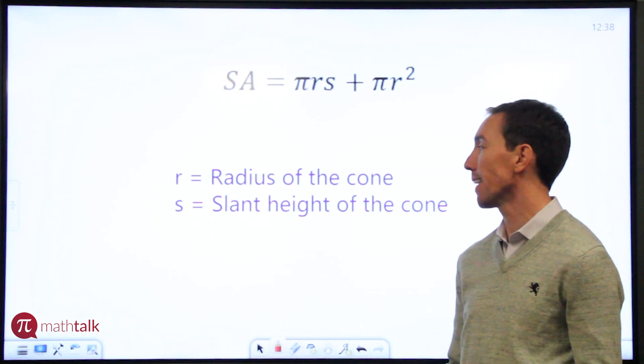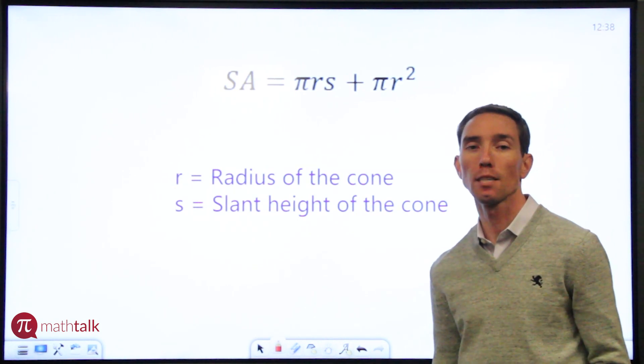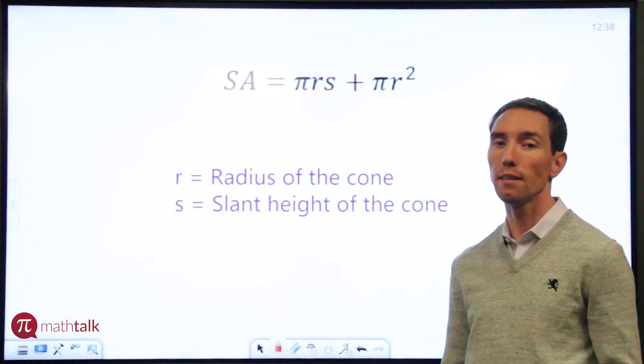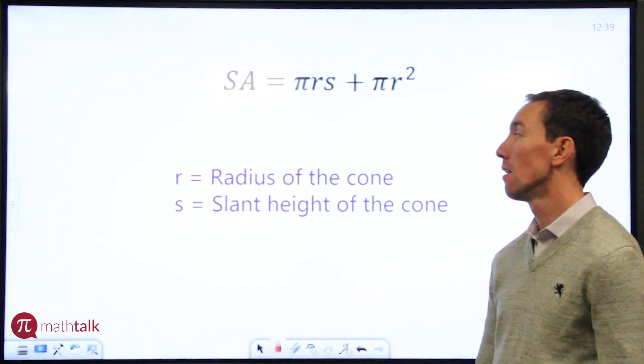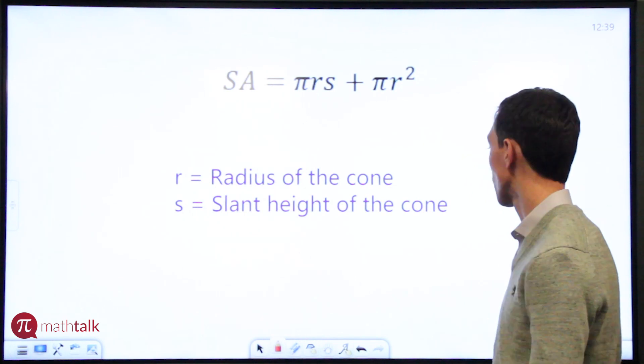And s represents the slant height of the cone. It's very similar to the slant height of a pyramid, it's basically the diagonal height. And so we're going to use that information to find a surface area. So let's get started.